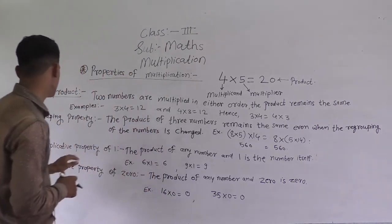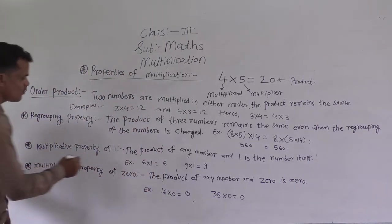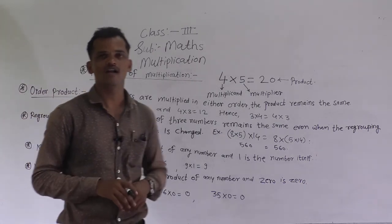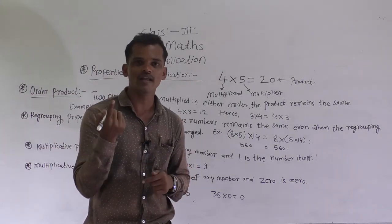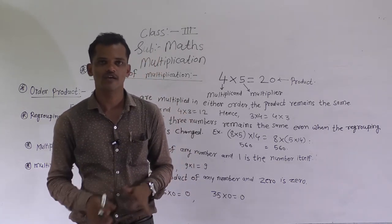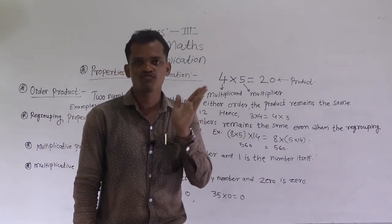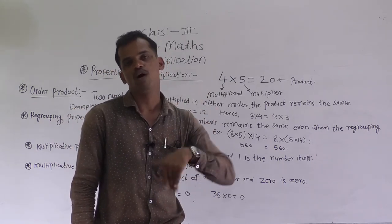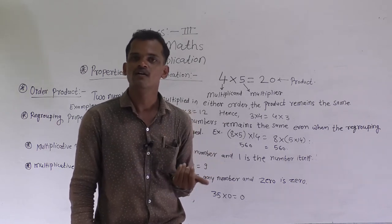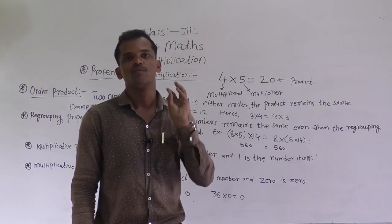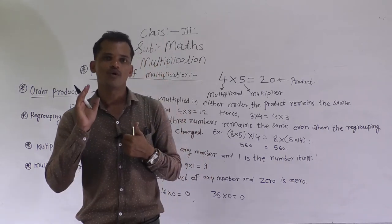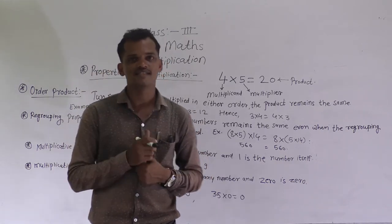The next one is the multiplicative property of 1. This property we have learned in second standard also. Any number multiplied by 1, the product remains that same number. For example, 5 into 1 — what will be the product? 5 1s are 5. If we multiply any number by 1, the product comes as that same number.